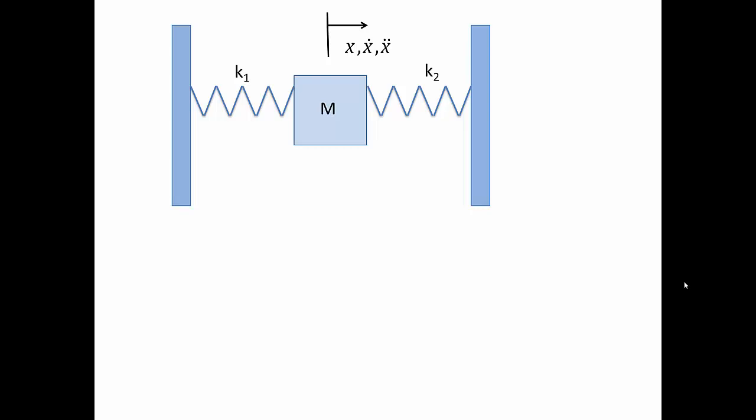The mass is connected to a spring on each side and both springs are connected to fixed walls. Again, the mass is restricted to move along the x direction and pointing to the right is positive. So what is the equivalent spring constant in this case?